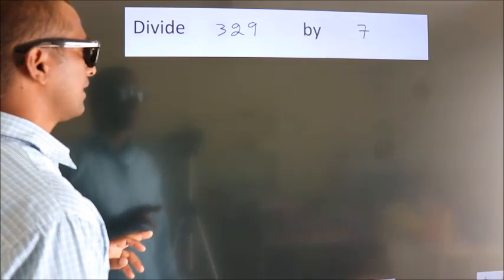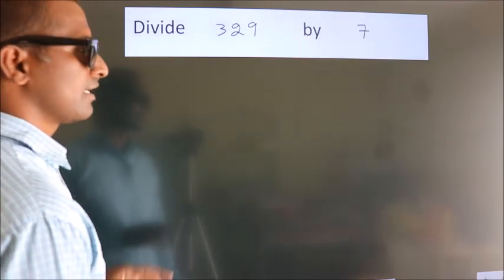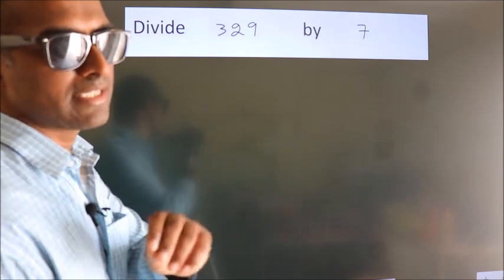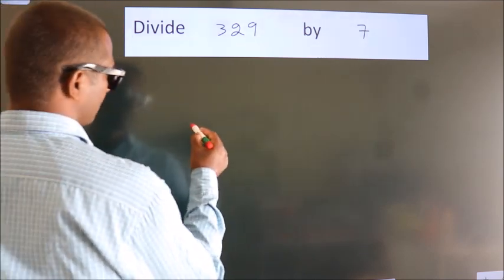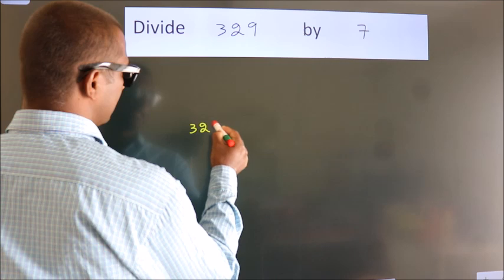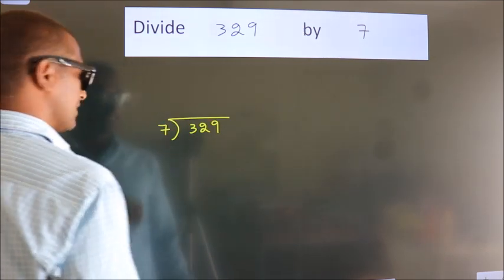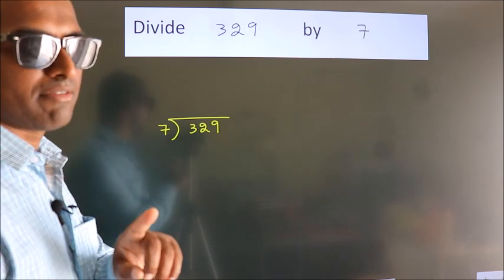Divide 329 by 7. To do this division, we should frame it in this way: 329 here, 7 here. This is your step 1.